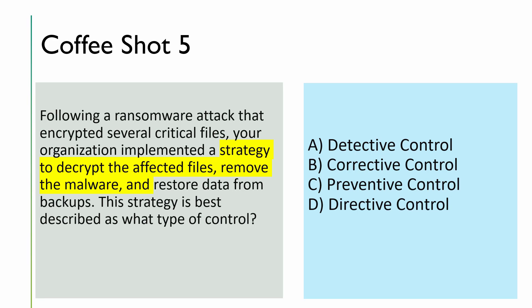Following a ransomware attack that encrypted several critical files, your organization implemented a strategy to decrypt the affected files, remove the malware, and restore data from backup. What type of control is this? The ransomware attack means an incident already occurred — preventive control has failed, and detective control already provided visibility. Now they're looking to decrypt files and remove malware — that is a countermeasure. Corrective control repairs impact after an incident. The answer is B — corrective control.